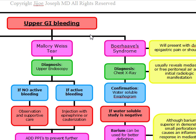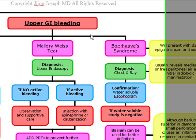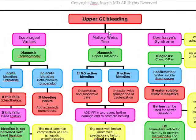Upper GI bleeding is usually due to things such as peptic ulcer disease and gastritis. It can also be caused by varices and Mallory-Weiss tears, which we're going to talk about here.